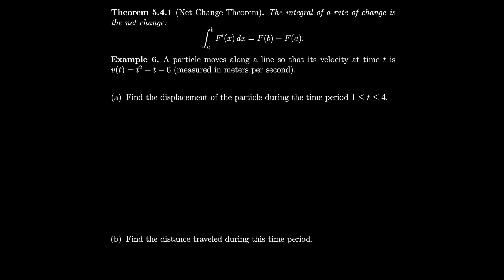Using the Fundamental Theorem of Calculus Part 2 and replacing our notation by putting a derivative inside, we see that the definite integral of the derivative is the change in the value of the original function. This implies the Net Change Theorem: integrating a derivative gives the net change of the original function. For example, a particle moves along a line with velocity v(t) = t² minus t minus 6. Let's find the displacement during the time period from one to four.